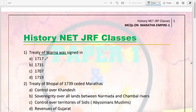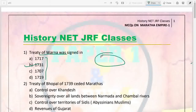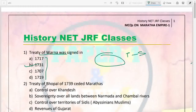The first question: the Treaty of Warna was signed in which year — 1717, 1731, 1707, or 1719? This treaty was signed in 1731 and it was a very important treaty because it ended the civil war in the Maratha Empire between Tarabai on one hand and Sahu and their supporters on the other.